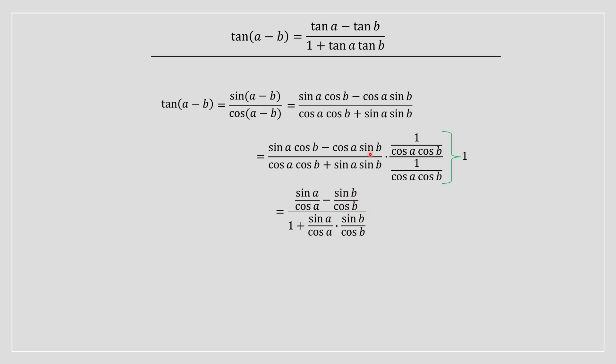Because you know the cos of a is basically going to cancel out. And you know the denominator, this is going to cancel out with this, it's equal to 1, and then it's going to be an addition. And then you are going to have sin of a divided by cos of a.